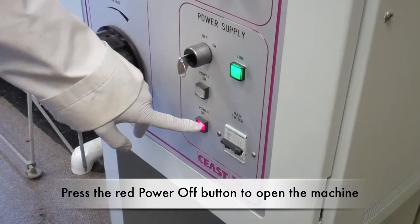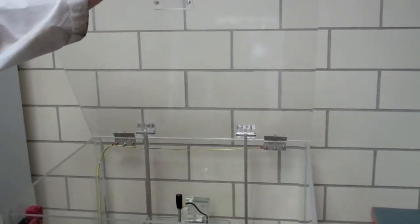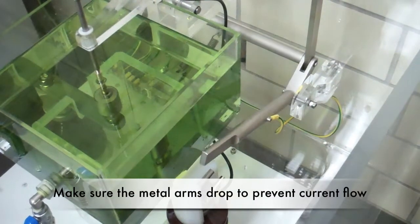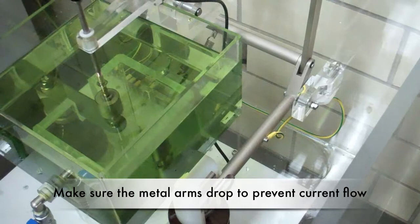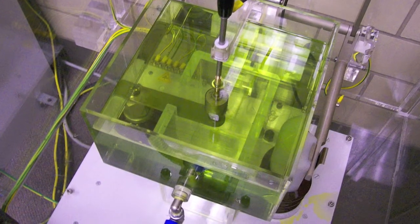To load your sample, depress the red power off button, then lift the lid. As the lid rises, two metal arms will lower, shorting the transformer circuit and preventing the flow of electric current. Do not load the sample until the two arms have been lowered.